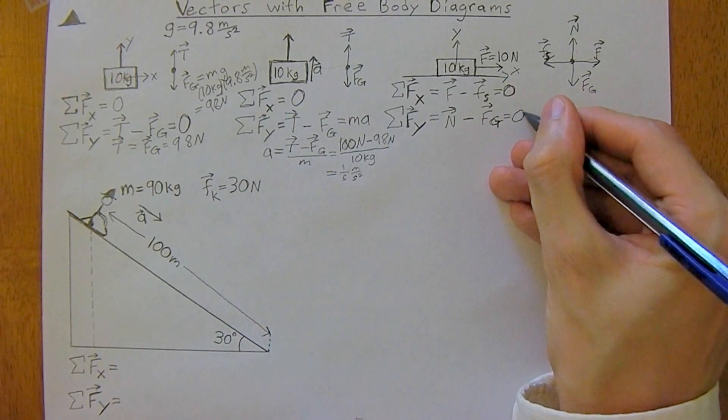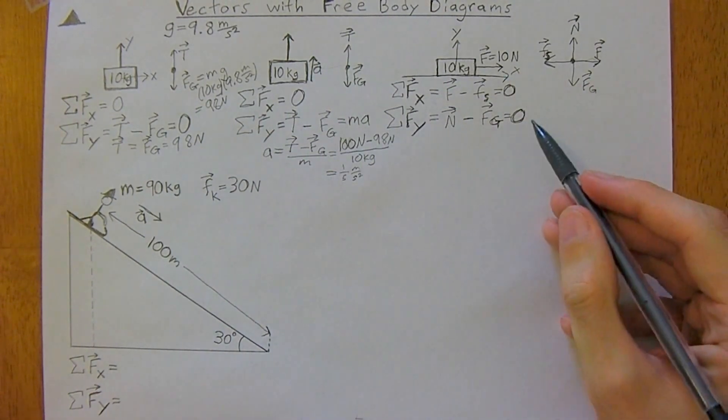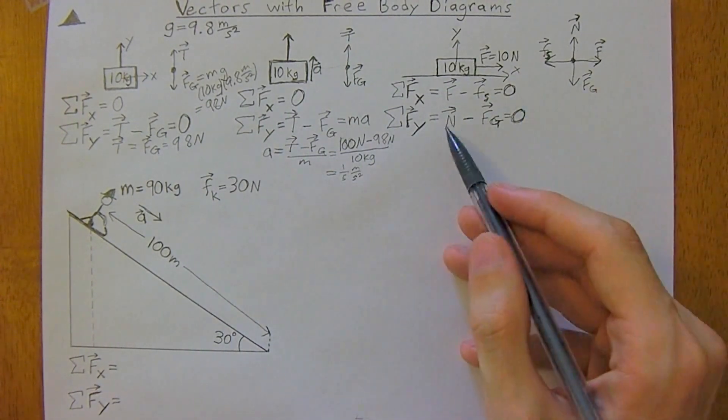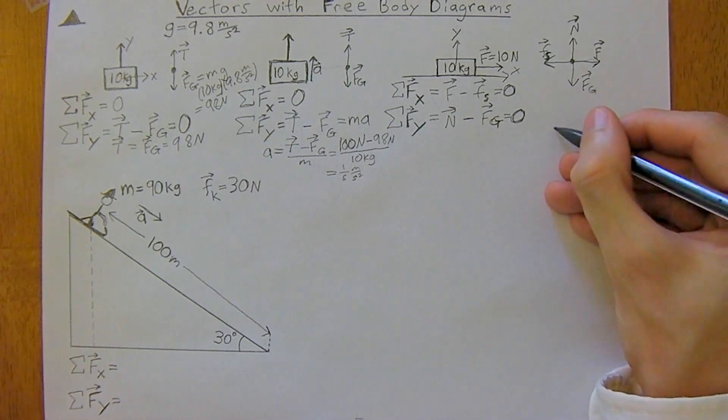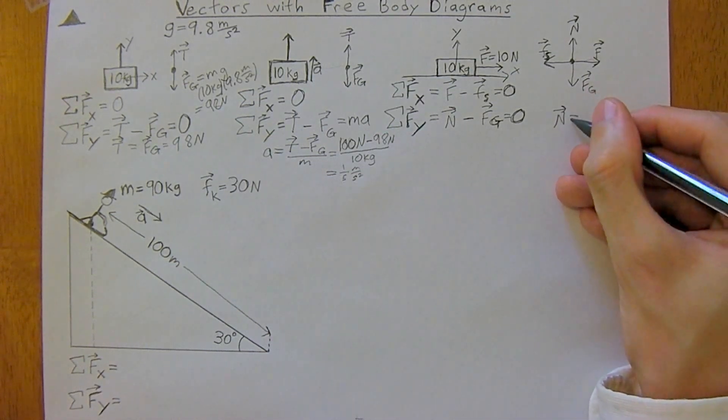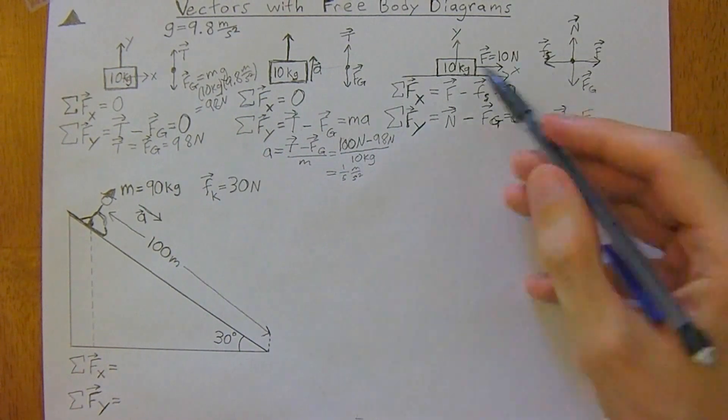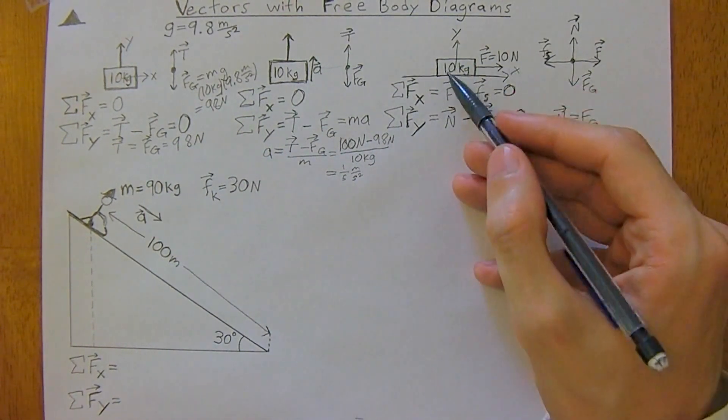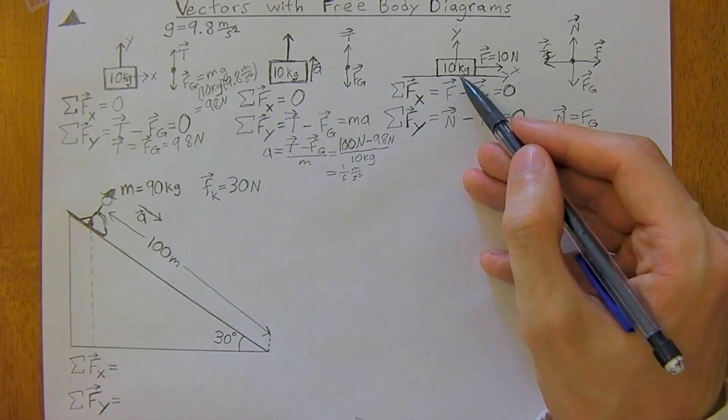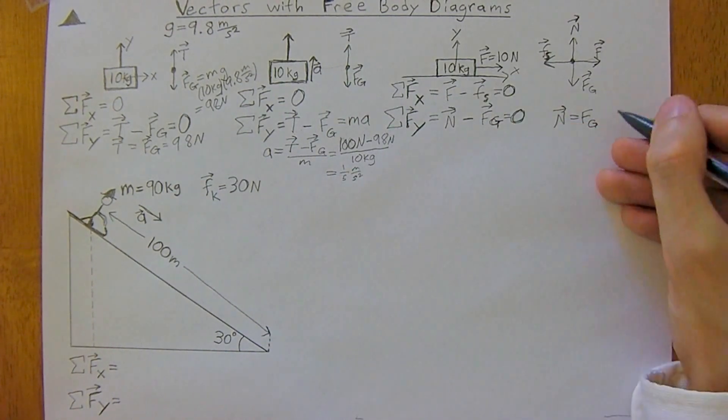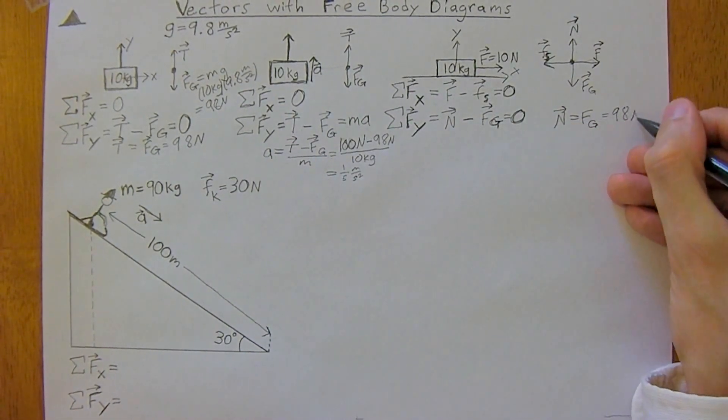And again, it's not moving, so it's going to be equal to zero. And that means that the normal force is going to equal force of gravity, which mg, so mass 10 kilograms times 9.8 meters per second squared, so it's 98 newtons.